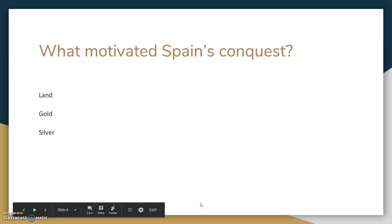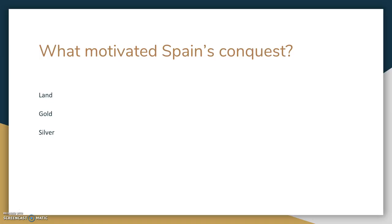So what motivated Spain's conquest? Land, gold, and silver. Land and expansion. This allowed Spain's king and queen to take the lower-class people — the peasants — and ship them over to the Americas to clear the land, farm it, raise tobacco, and run the mines.